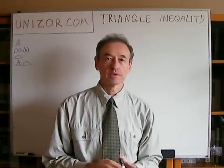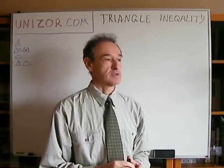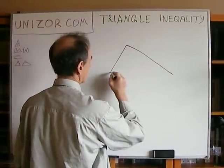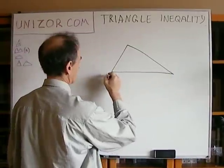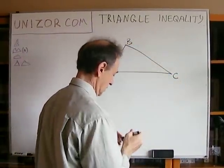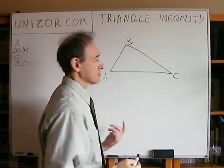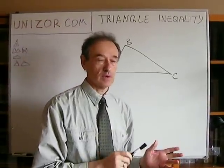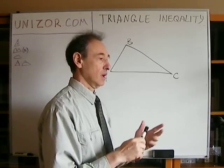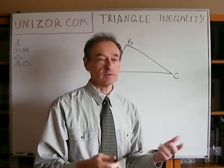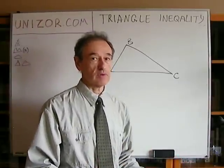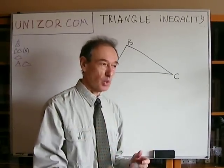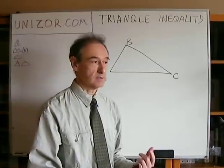I will explain what the triangle inequality is in a simple case first of all. It actually states the following: that any two sides of a triangle, if you add together their lengths, it will be longer than the third side. So any triangle — whatever it is, acute angle, obtuse angle, right triangle, longer sides, shorter sides — for any triangle, the sum of the lengths of two sides is always greater than the length of the third side.